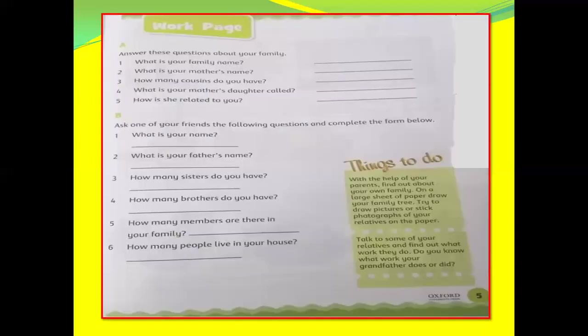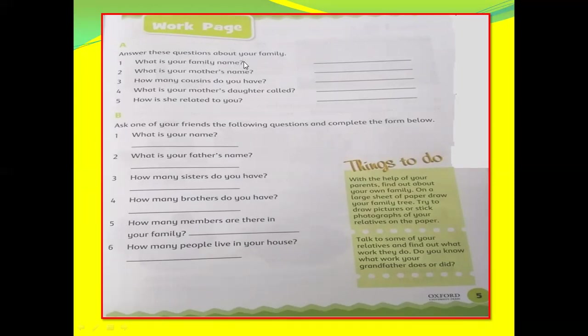Now we will do page number five, part A: Answer these questions about your family. Keep in mind, students — write only about your own family, don't copy from here. Question number one: What is your family name? Each family has one specific or unique name. You can write your family name — for example Sheikh, Malik, Chaudhri. These are some family names. But students, you are from different countries, so write your own specific family name.